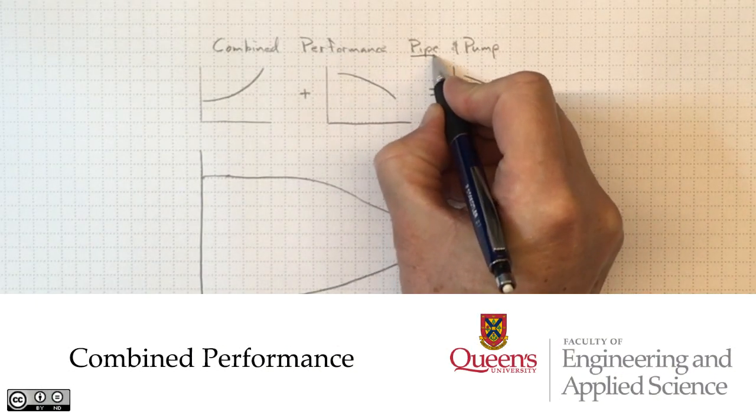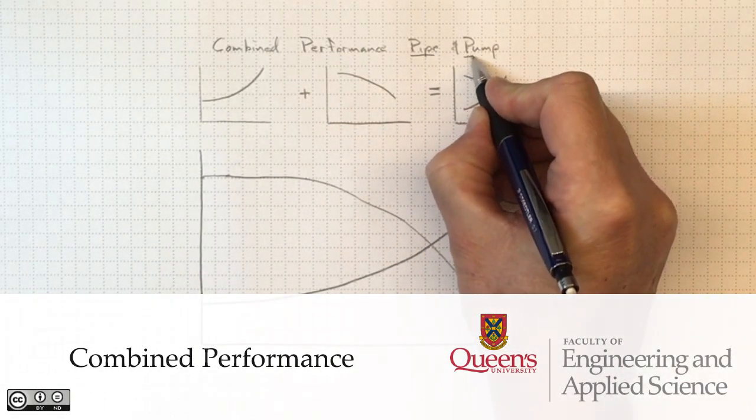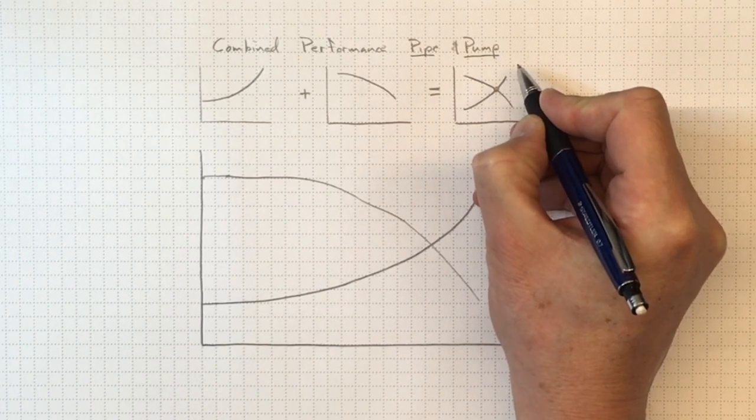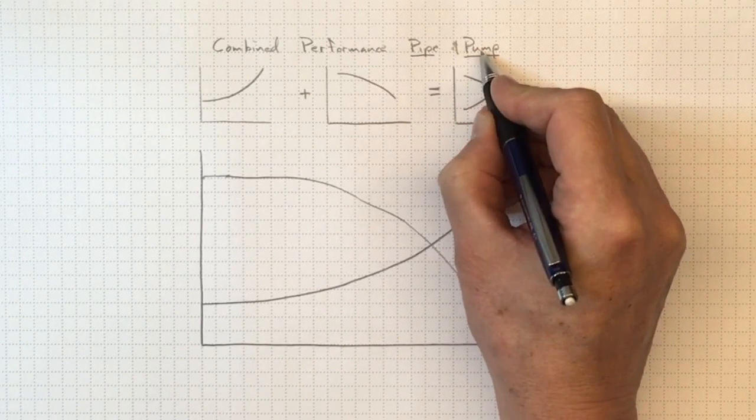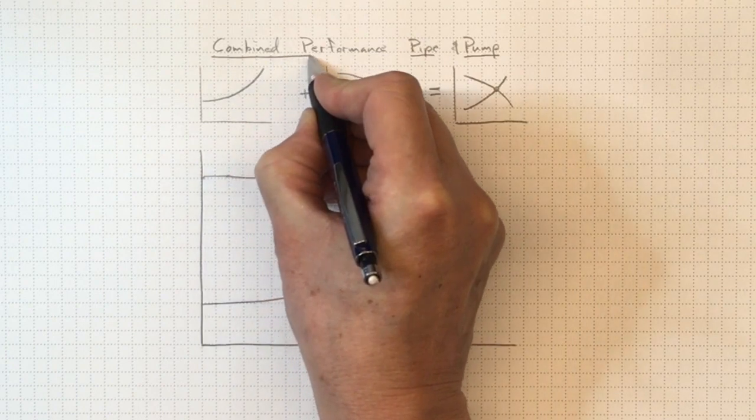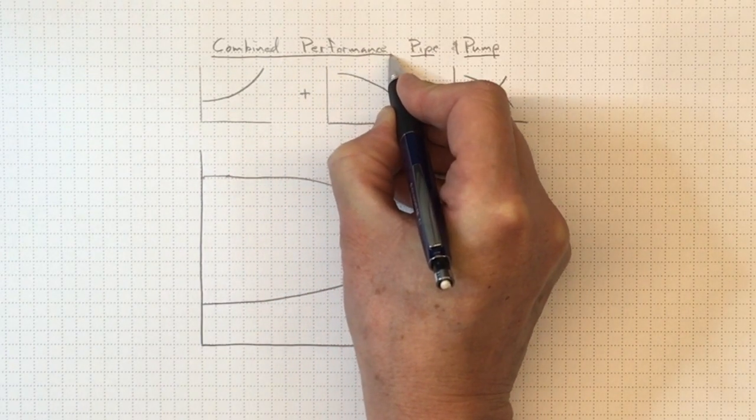Once we've picked out what our piping system is going to look like and what our pump is that we're going to put into that piping system, we can look at their characteristics to predict the combined performance when we actually put them together.